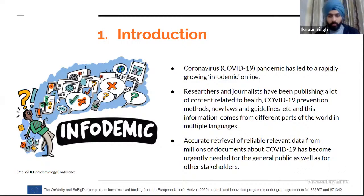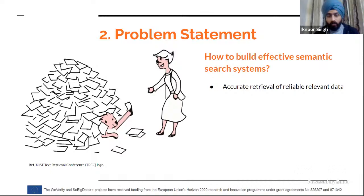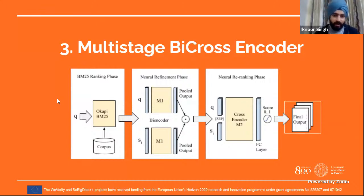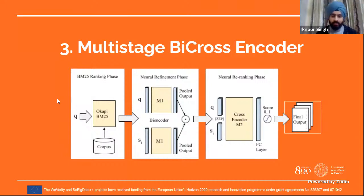We want to build an effective semantic search system capable of accurate retrieval of reliable, relevant data that retrieves fast and is capable of extracting information in a cross-lingual setting. We present this multi-stage bi-encoder/cross-encoder approach, which is basically a sequential three-stage ranking pipeline: the first stage is lexical-based retrieval using BM25; then there are two neural stages using bi-encoder and cross-encoder models to rank documents effectively with respect to the query.